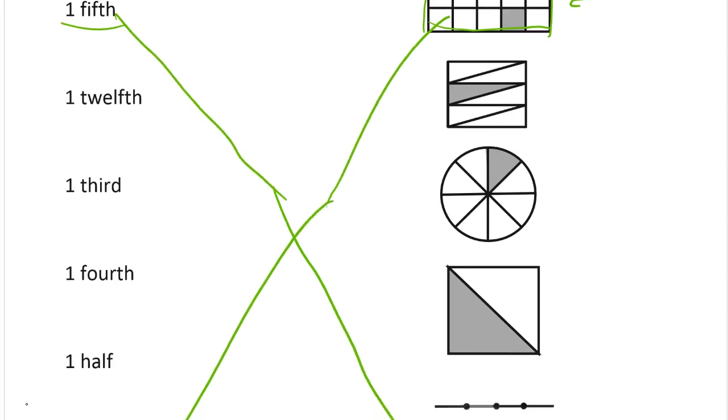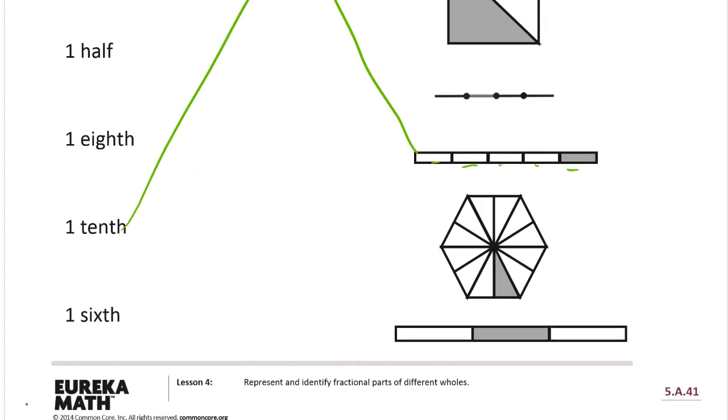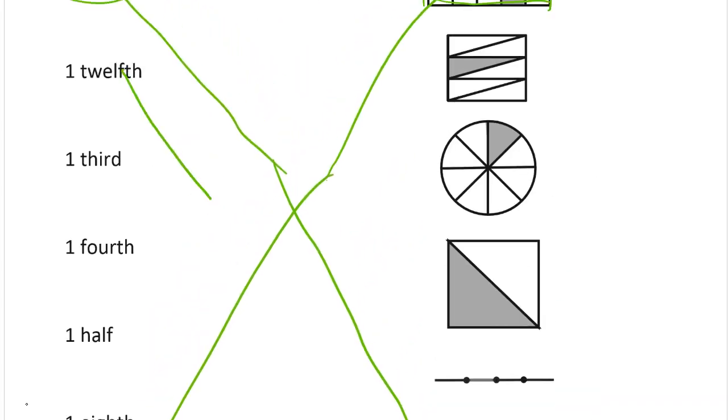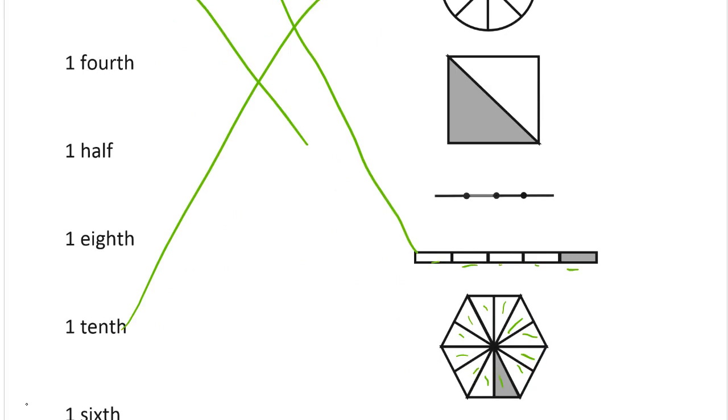The twelfth. So we need something with twelve pieces. This hexagon looks like it might have twelve pieces that all come out almost like a circle here. Let's see. One, two, three, four, five, six, seven, eight, nine, ten, eleven, twelve. Those are twelfths and one of them is shaded. So that's one twelfth.